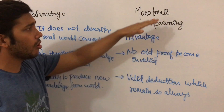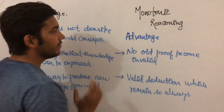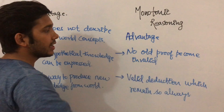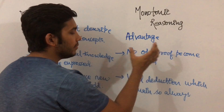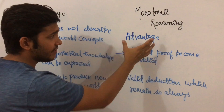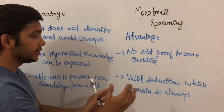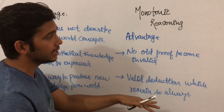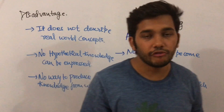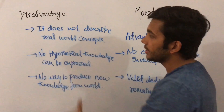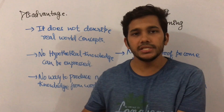The advantages of monotonic reasoning: no old proof becomes invalid — after adding another clause, the proof will not change. Another advantage is valid deductions remain always valid. If you have deduced any valid reason from given sets of clauses, it will remain valid always.